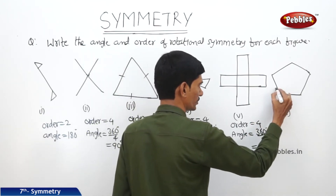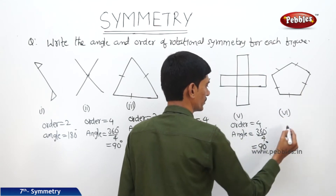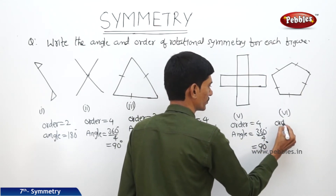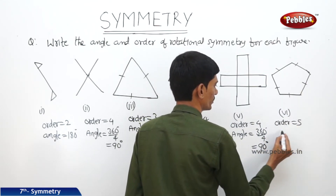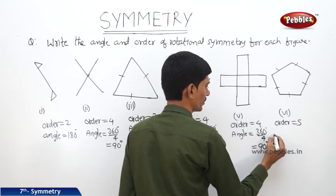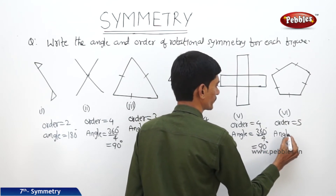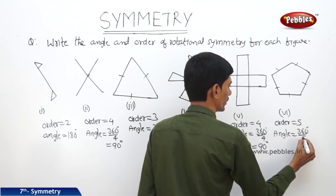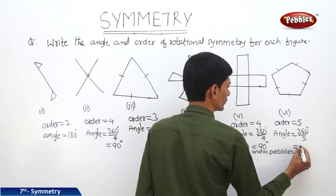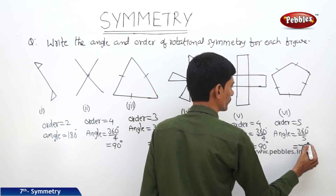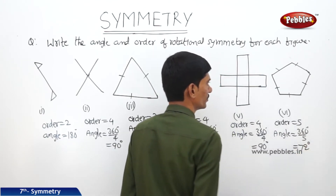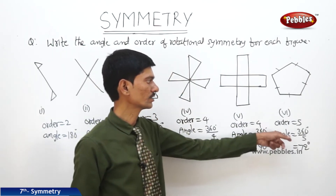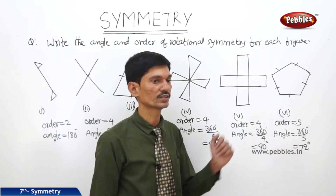Now in case of a regular pentagon, the order is 5 and the angle of rotational symmetry is 360 degrees divided by 5, which equals 72 degrees. For the regular hexagon, 360 divided by 6 gives us 60 degrees.